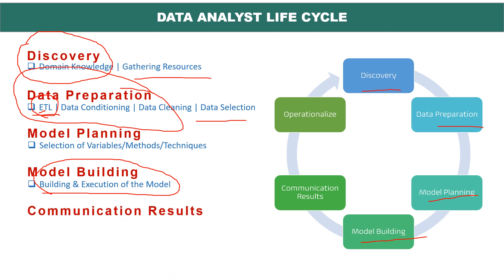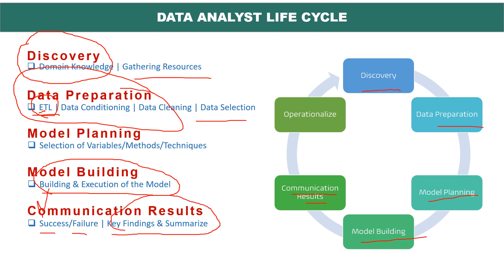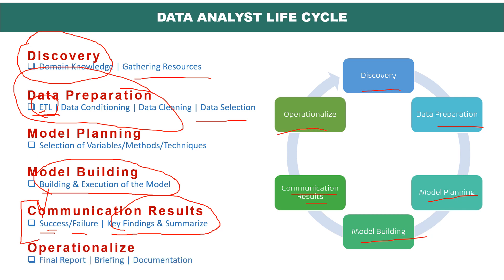Then it comes to communicating results. What is the outcome of that particular model? Is it successful or is it a failure? What are the key findings and you have to summarize them. Once you have prepared the model and run through it, you define whether it is successful or failure in this step. Then you have to operationalize — prepare a final report, brief and discuss with the stakeholders, and document that particular model as well.